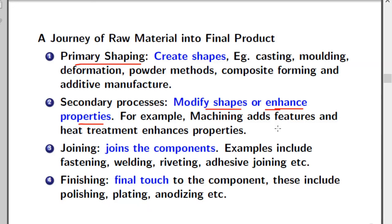The third set of processes are called joining processes. Components are joined in this process because a complete machine cannot be made using a single process. Multiple components are joined together by various joining methods — for example, simple fastening, welding, riveting, or, in the case of composite materials, adhesive joining.